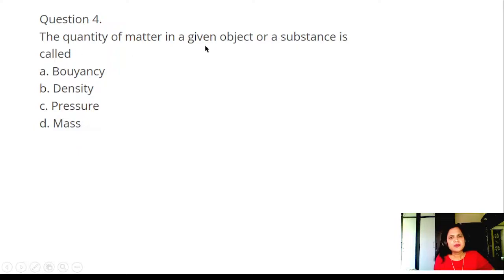Question 4: The quantity of matter in the given object or substance is called: buoyancy, density, pressure, or mass. The quantity of matter in the given object or substance is called mass. Pressure is wrong.